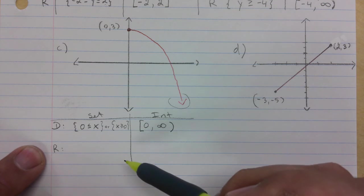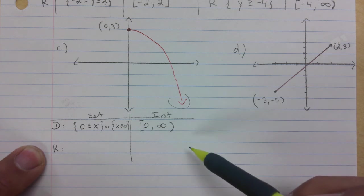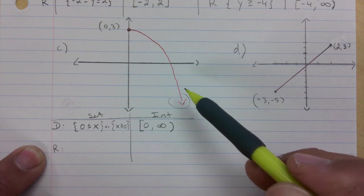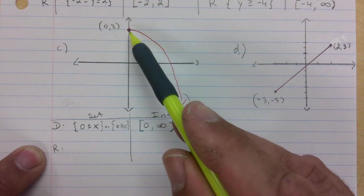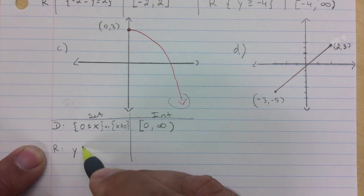So here the interval notation would be zero to infinity, zero included, infinity is not. For range, how would you do range? Well, you're coming from the bottom. It's always there, right? As you're coming from the bottom it's already there because of the arrows, and you stop at three.